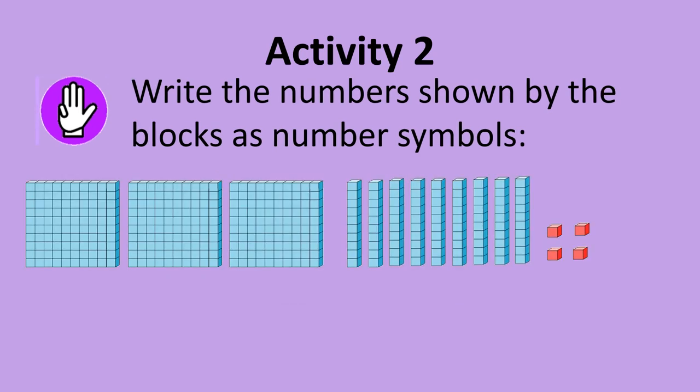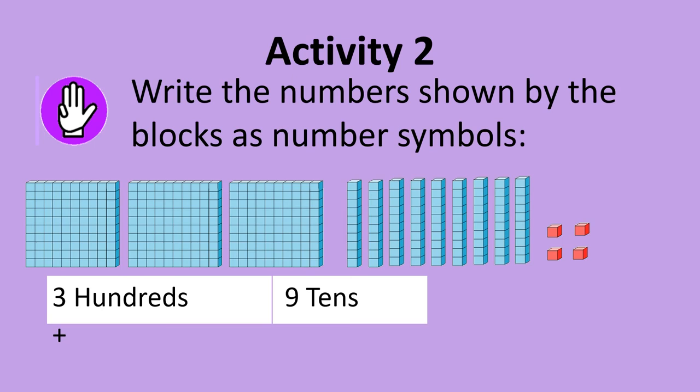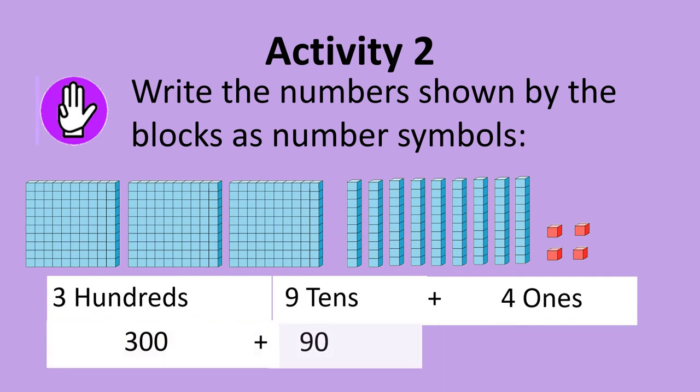Here is another one. Write the numbers shown by the blocks as number symbols. There are 3 hundreds, 9 tens and 4 1's. So 300 plus 90 plus 4 is 394. Yes.